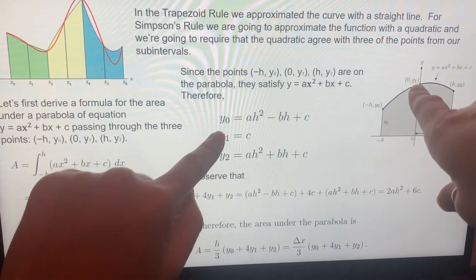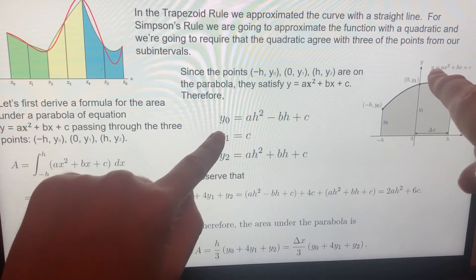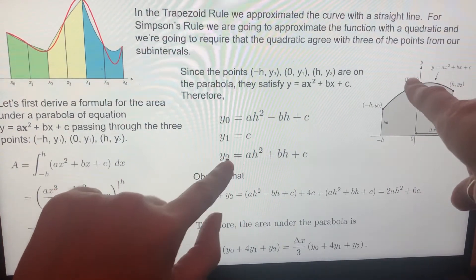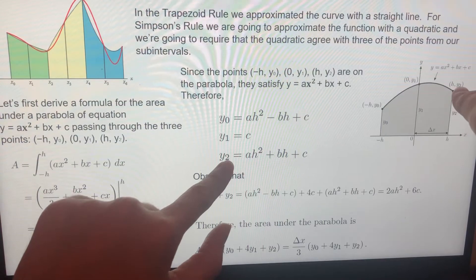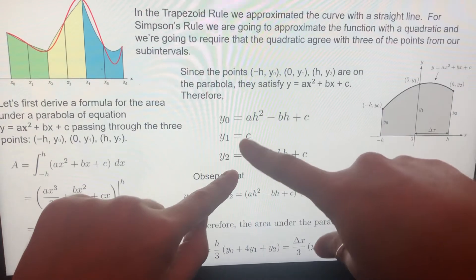And if I plugged zero y one, which means that when x is zero, this is zero, this is zero, y should be y one. So y one equals c. It's coming from this point. And this third equation is coming from h y two. When x is h, y is y two. We have these three equations.